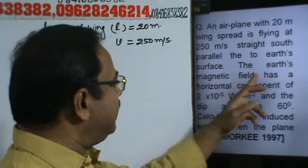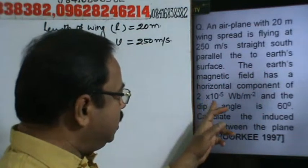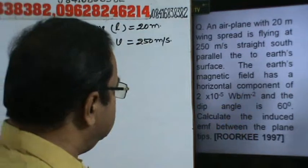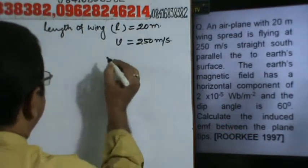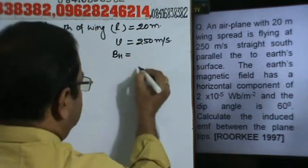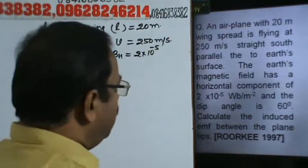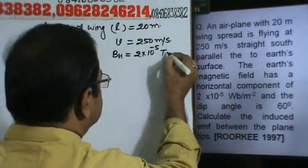The earth's magnetic field has a horizontal component of 2 into 10 to the power minus 5 weber per meter square. The horizontal component BH is equal to 2 times 10 to the power minus 5 Tesla.